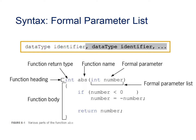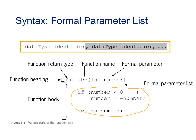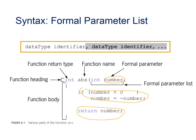Looking at the syntax of the formal parameter list: this is your function heading, this is your function return type, here is your function name, this is your formal parameter or parameter list, and this is the function body — what you want your function to perform. Note that where we have 'return number,' we are passing a number to the function, performing some type of calculation, and then returning the changed value back to the caller.